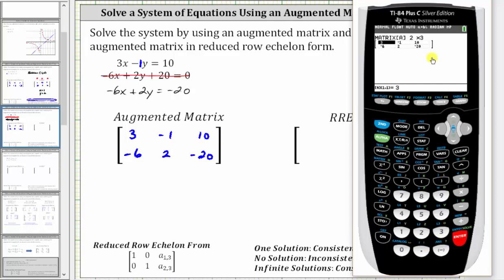And now we go back to the home screen by pressing second mode for quit. Go back to the matrix menu by pressing second, x to the power of negative 1, right arrow once to math, up five times for RREF for reduced row echelon form. Press enter.